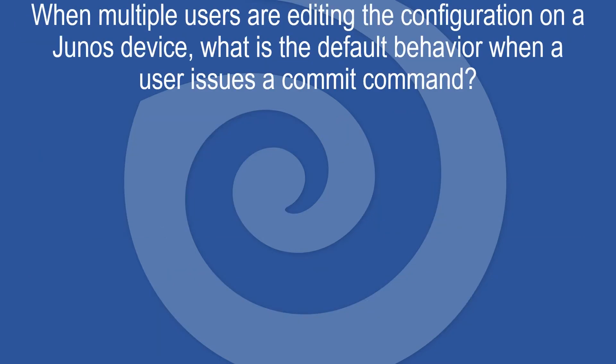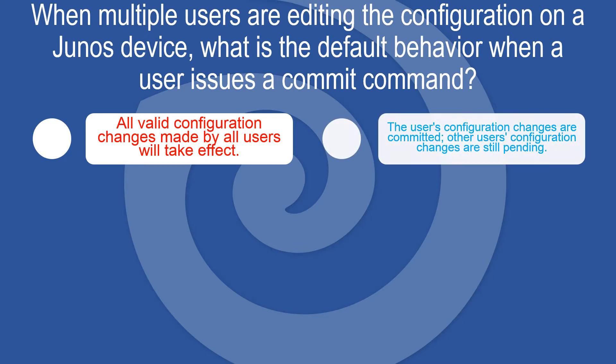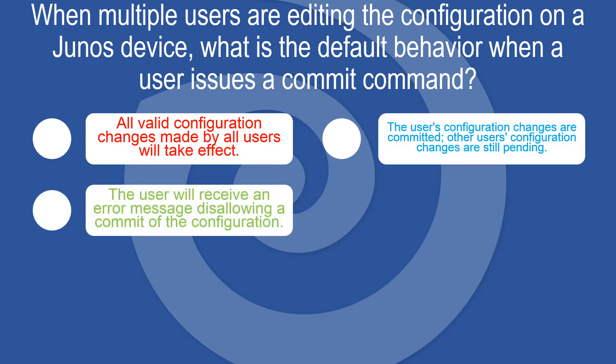When multiple users are editing the configuration on a Junos device, what is the default behavior when a user issues a commit command? All valid configuration changes made by all users will take effect. Or: the user's configuration changes are committed while other users' configuration changes remain pending.